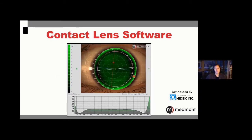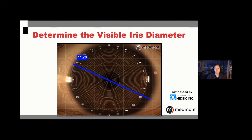This is where we use the Medmont contact lens software — a tool that lets you take your highly accurate map and place a rigid contact lens on top of that topography. You can optimize the fit, diameter, apical clearance, landing, and edge lift, so that you place the right first lens on the patient the first time, making you more efficient in practice. The first step is measuring visible iris diameter. For those who have had the Medmont E300, you'll now notice a color image to assess the borders of the visible iris, plus a wider field of view.